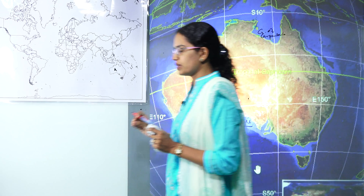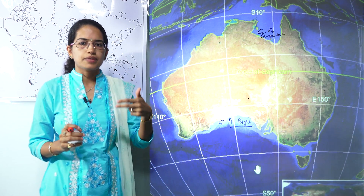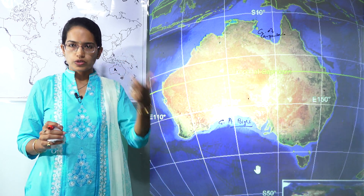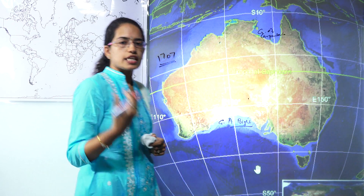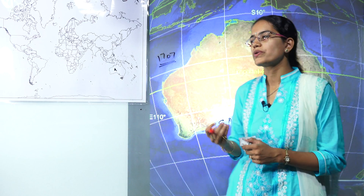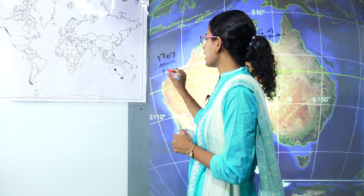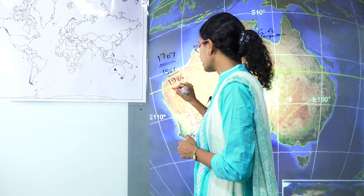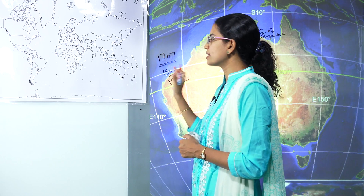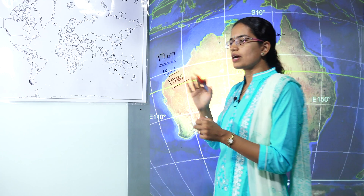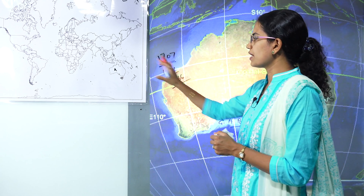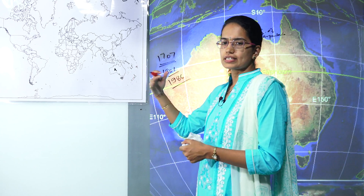Looking at the history, Australia was initially discovered by a Dutch sailor named Janszoon. Later in 1770, British sailor James Cook was the first who talked about Australia in detail. In 1901 the Commonwealth of Australia was established, and in 1986 British rule completely ended in Australia.